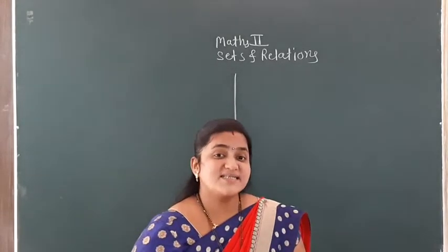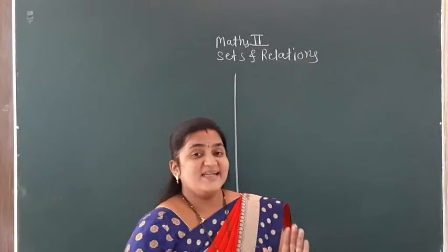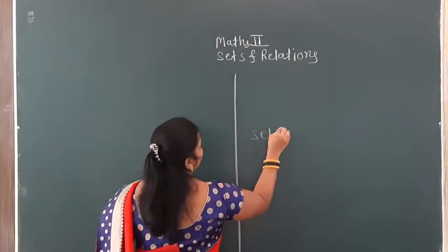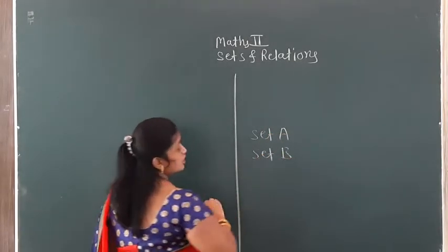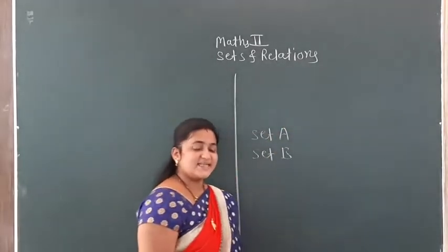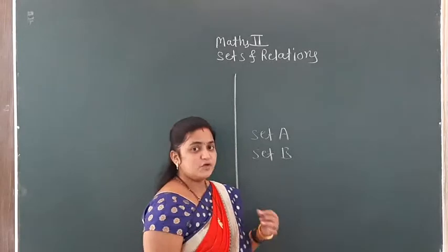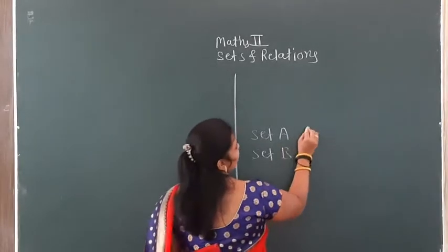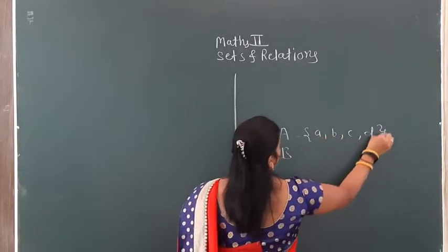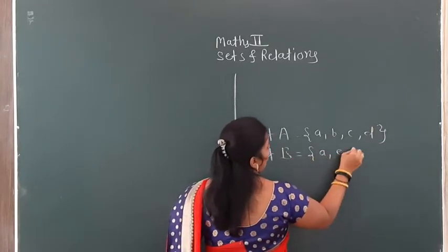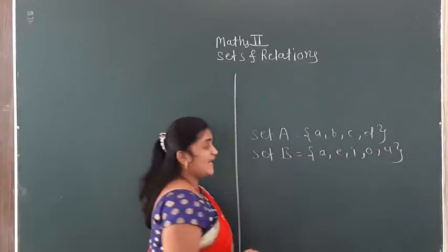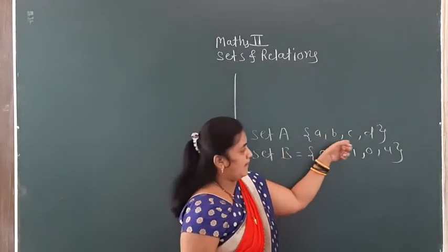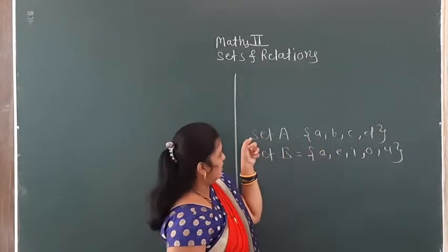How do we write a set? Every time we write capital letters — Set A, Set B. The set is a collection of elements, and elements are represented by small letters. For example, Set A contains a, b, c, d. Set B contains a, e, i, o, u. The elements are small letters, separated by commas.